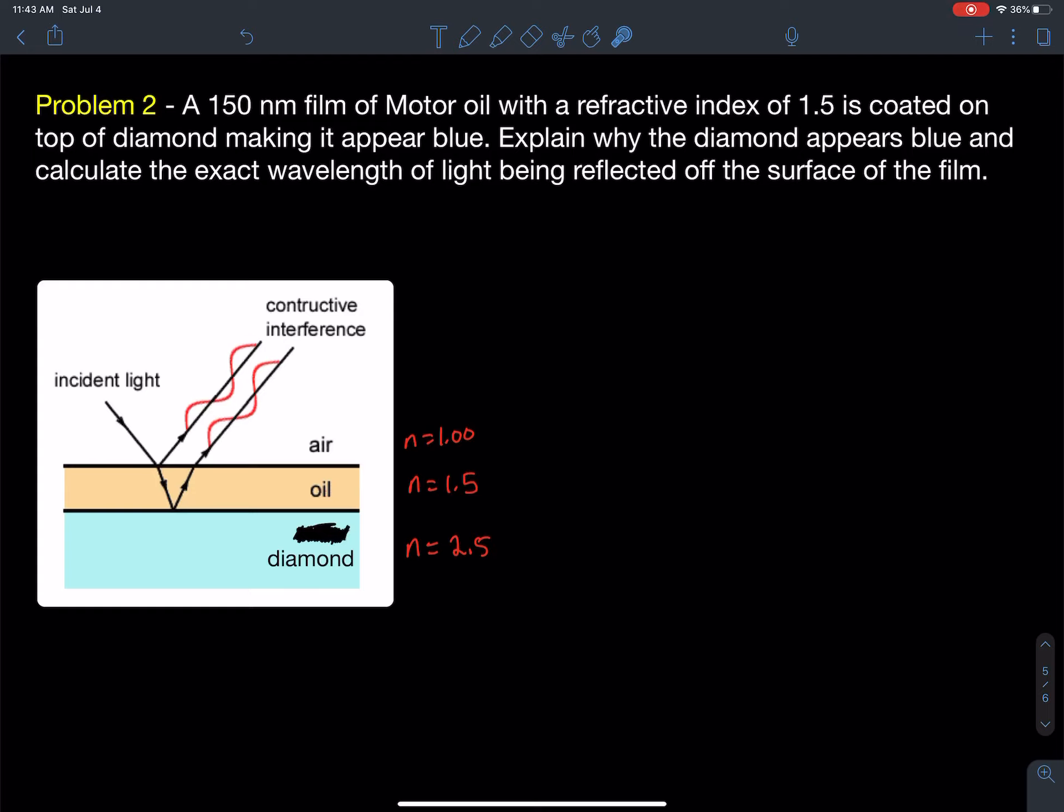Here's another thin film interference problem. I have the diagram drawn for you here. You've got air with a refractive index of 1, oil with a refractive index of 1.5, and diamond that the oil is coating with a refractive index of 2.5.